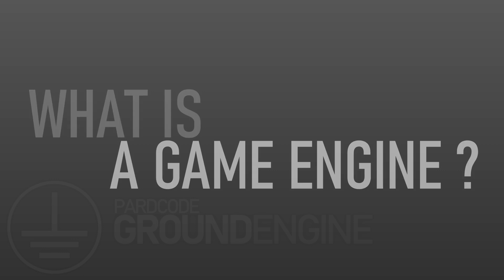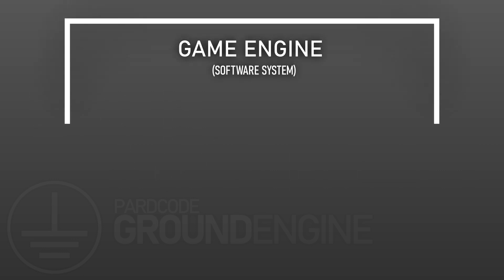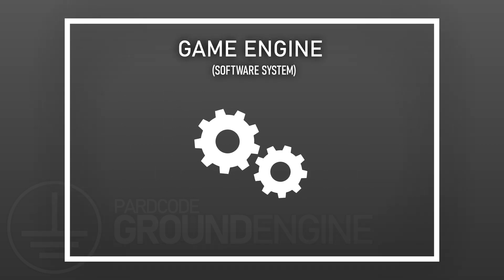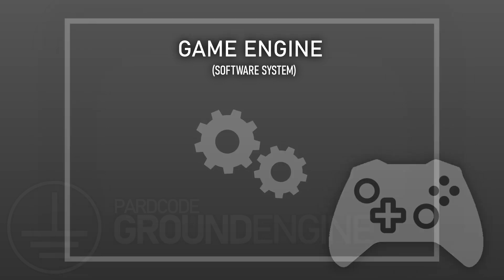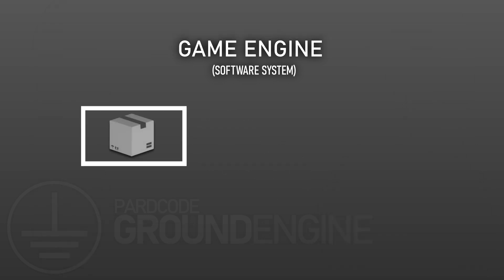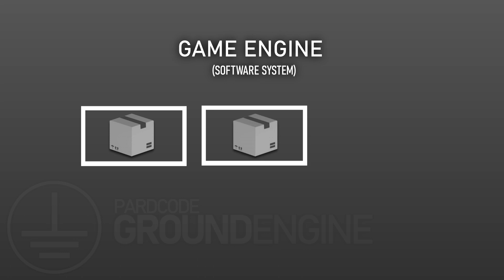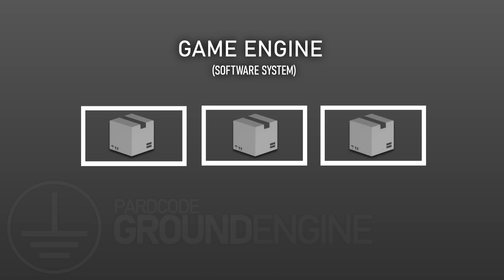First of all, what is a game engine? A game engine is a complex software system designed to simplify the development of video games. It is composed by other software subsystems, also called software components. In software engineering, a software component is a software package, module or subsystem that encapsulates a set of interfaces, functions or data related to a specific functionality.